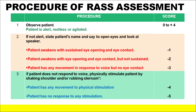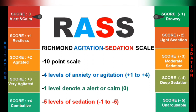If the patient does not respond to voice, physically stimulate the patient by shaking the shoulders or rubbing the sternum. If the patient has any movement to physical stimulation, the score is minus four. If the patient has no response to any stimulation, the score is minus five. For most patients, a RASS score of zero to minus two is desirable. This is all about today's video regarding the RASS, the Richmond Agitation-Sedation Scale.